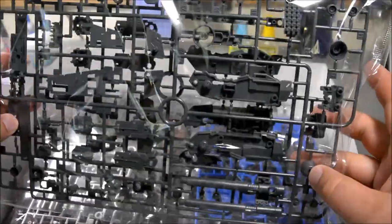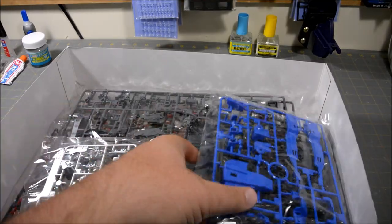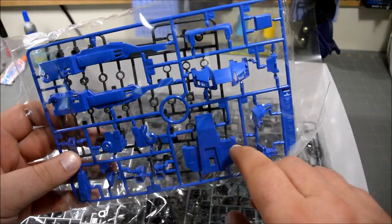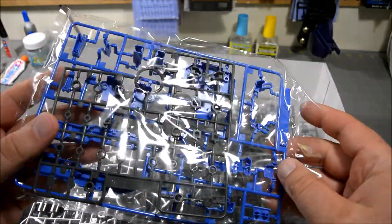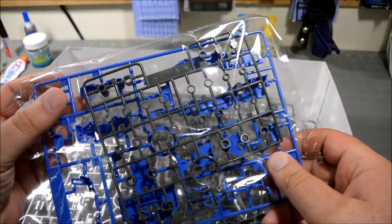Another runner of blue parts, looks like the torso and the double beam cannon, and I think that's pretty much it there.